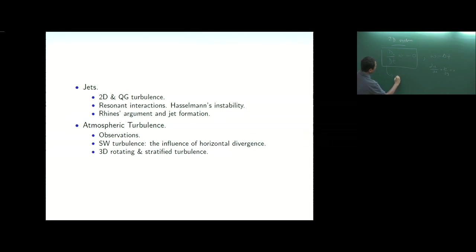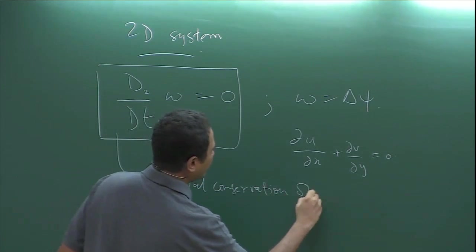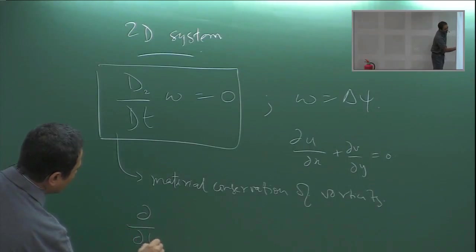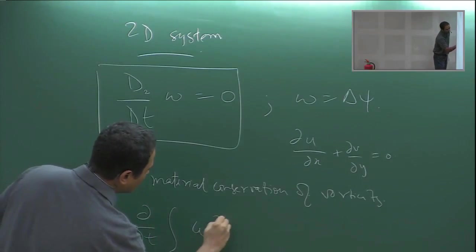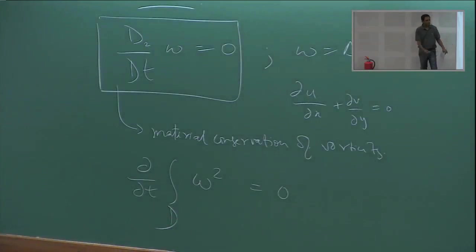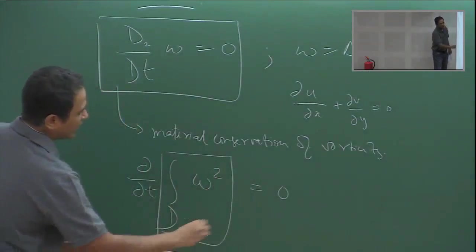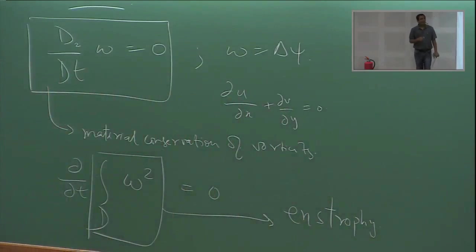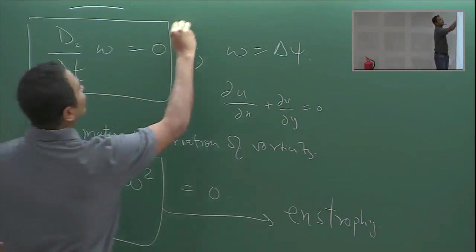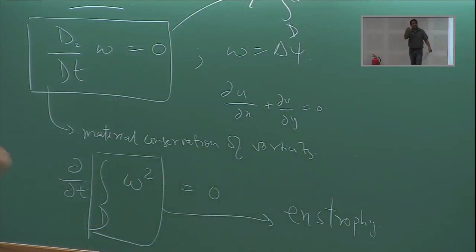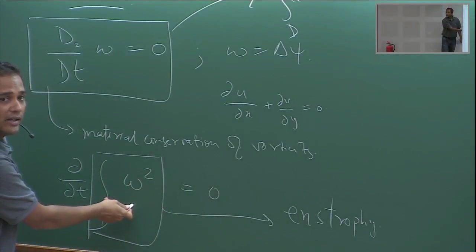This is the material conservation of vorticity. Associated with this, one can immediately write down a global conservation law. If you take omega-squared and integrate it over the entire domain, this quantity remains constant. This is known as the enstrophy. In 2D the system conserves the integral of u² + v² — the energy — and in addition it also conserves enstrophy.